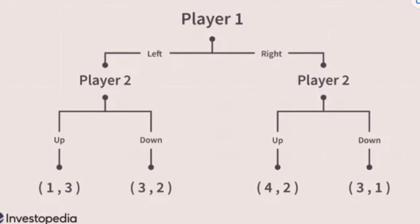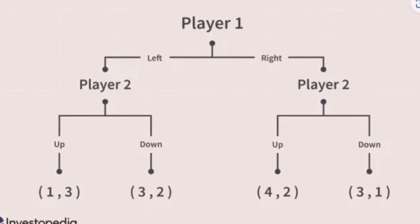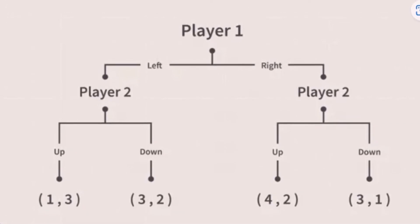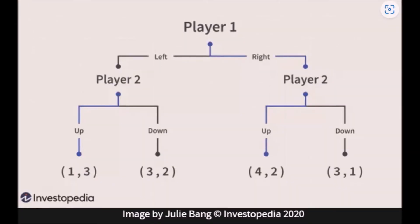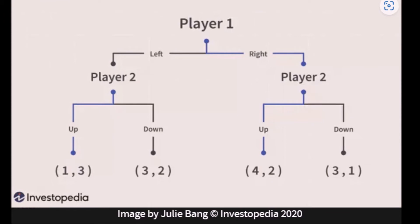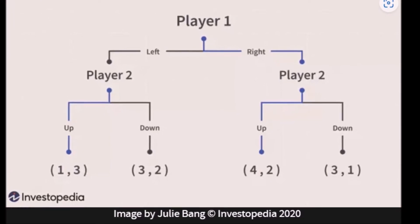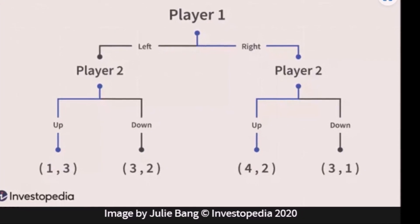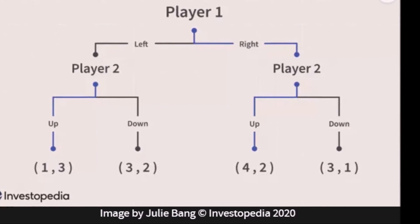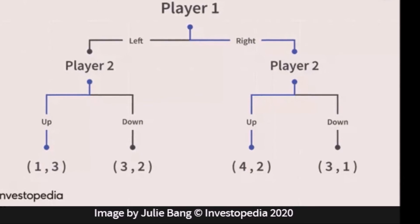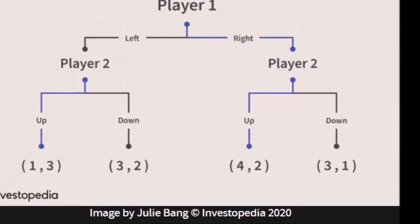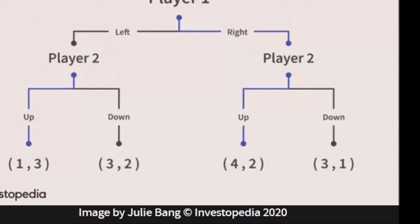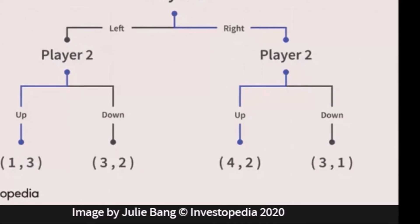Player 2 makes his choice known to player 1, who can now also maximize his payoff, and by doing so they can work together to reach the highest payoff, 4.2 points. The game is sequential, so player 1 makes the first decision and chooses between left or right, and player 2 makes his decision after player 1 and can choose between up or down. The result is an equilibrium found by backward induction of player 1 choosing right and player 2 choosing up, and what's highlighted in blue is the path which will lead to the best outcome, 4.2 points.